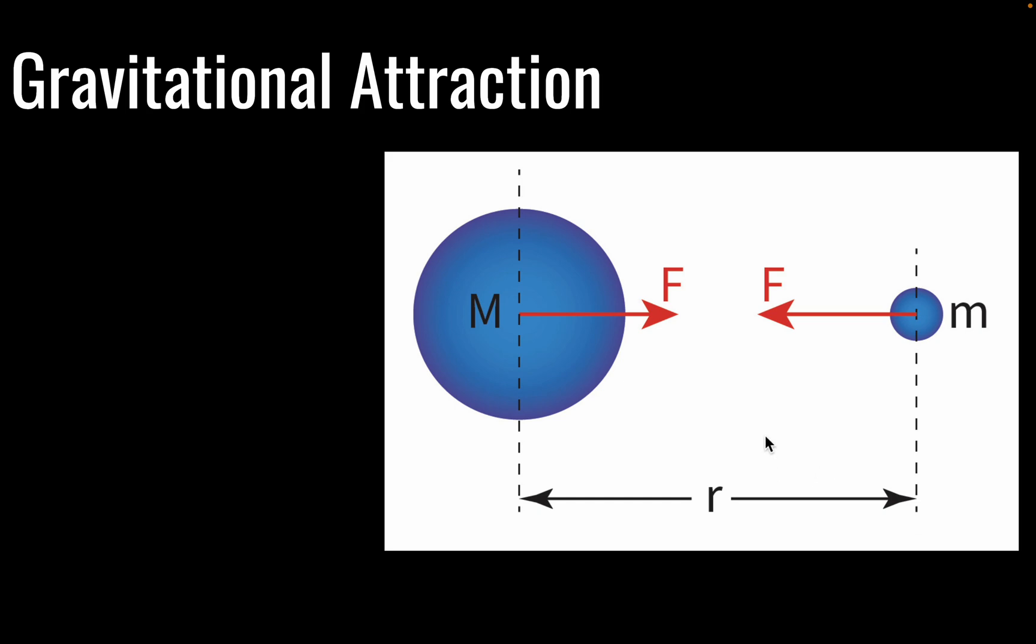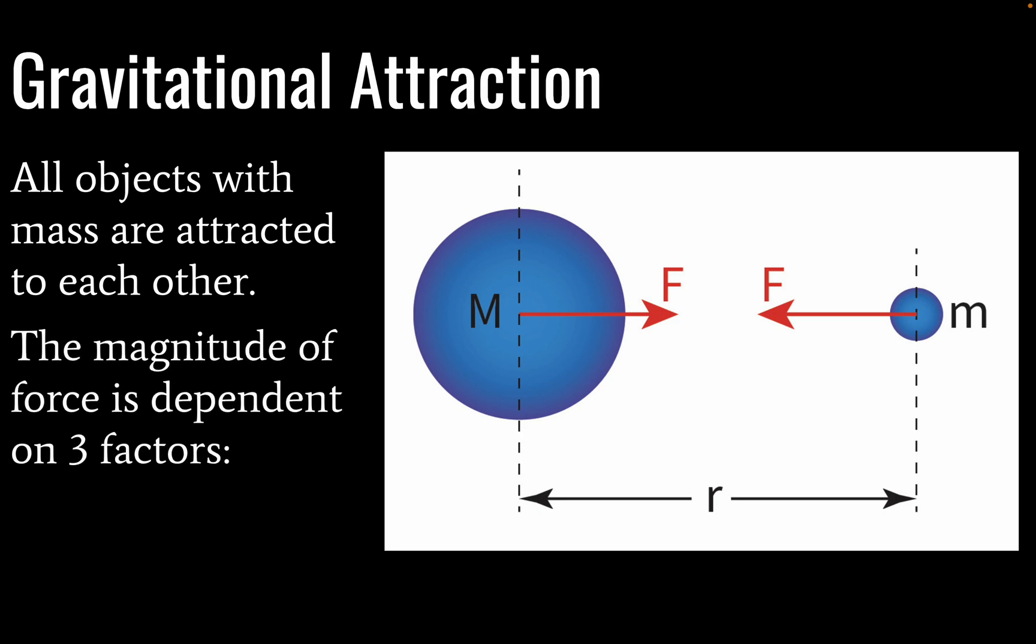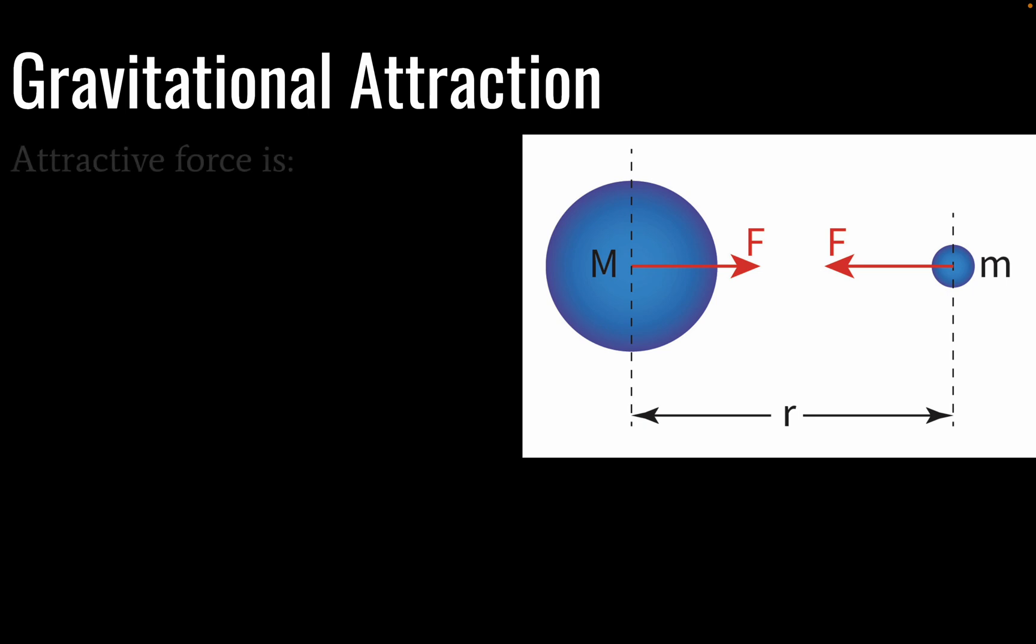So here we have two masses: a larger mass and a smaller mass. These are separated by a distance, which we are calling here R. These two masses are exerting a force on each other. In fact, all masses in the universe are attracted to each other. If you are standing next to someone right now, you are gravitationally attracted to them.